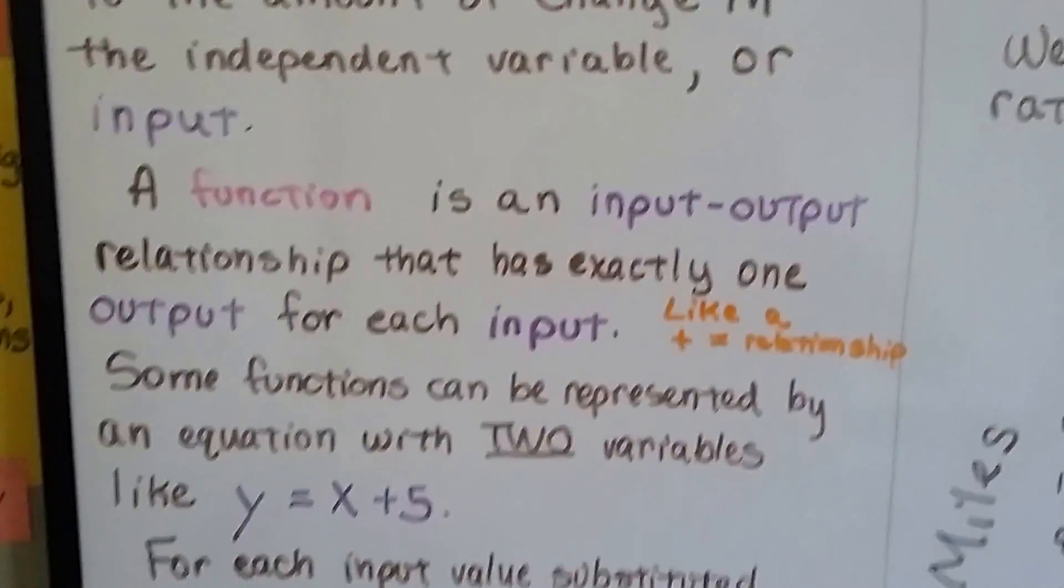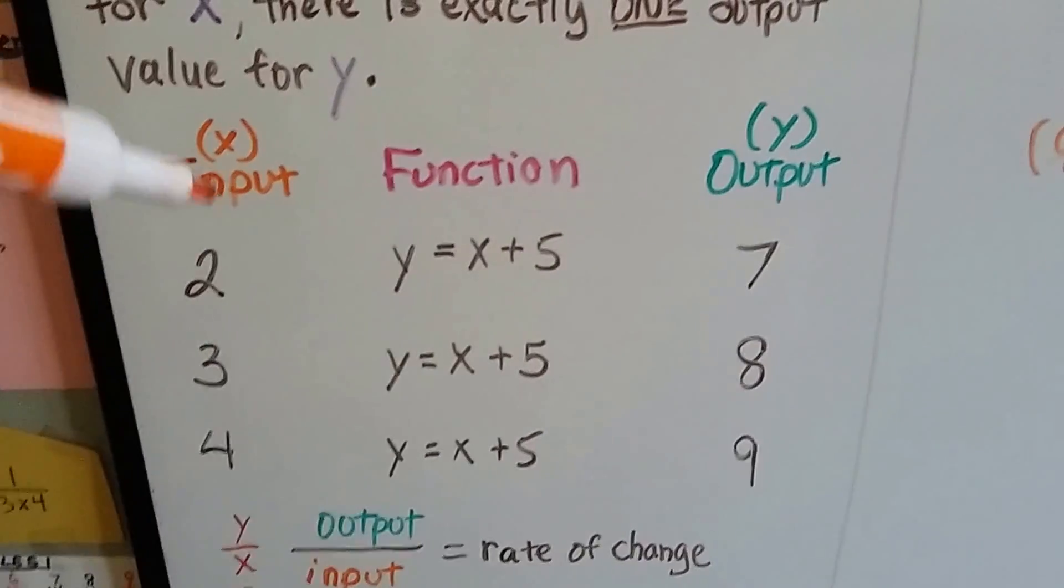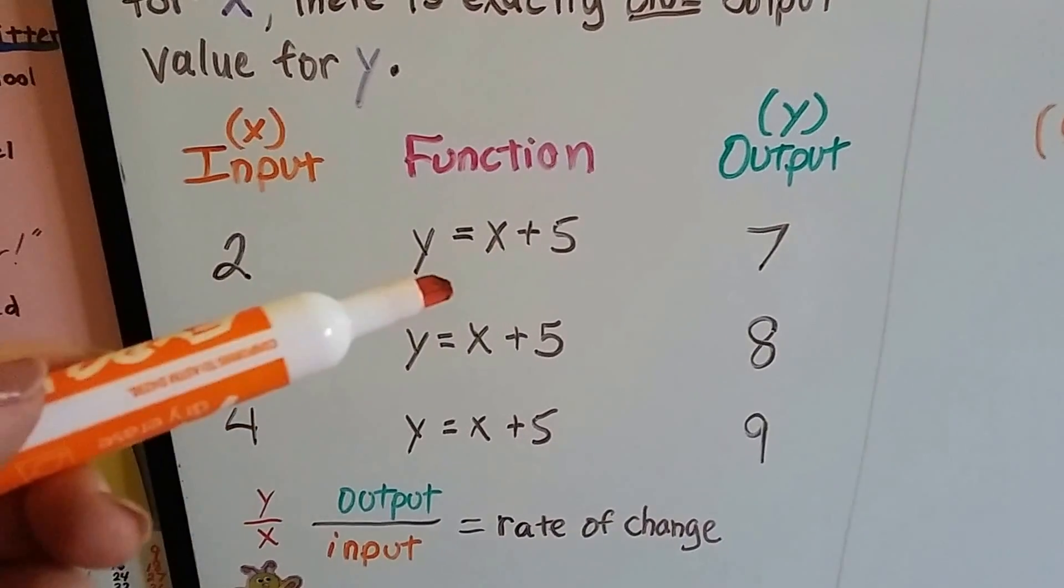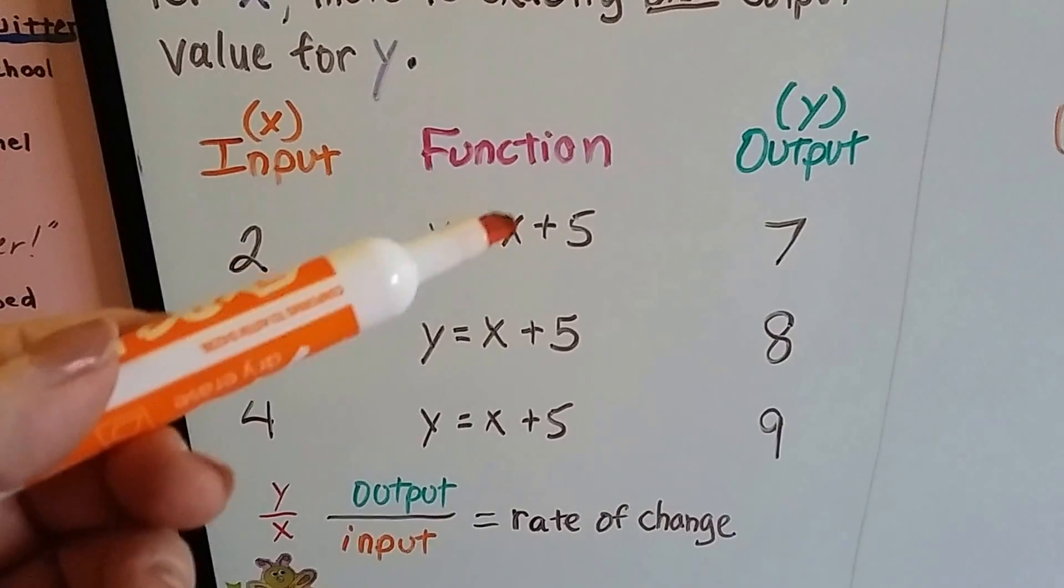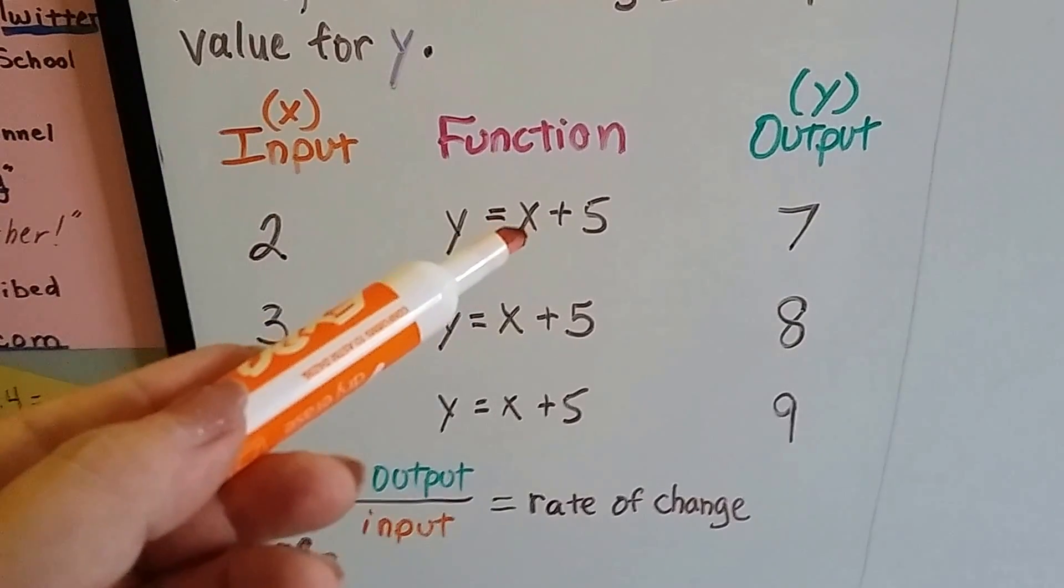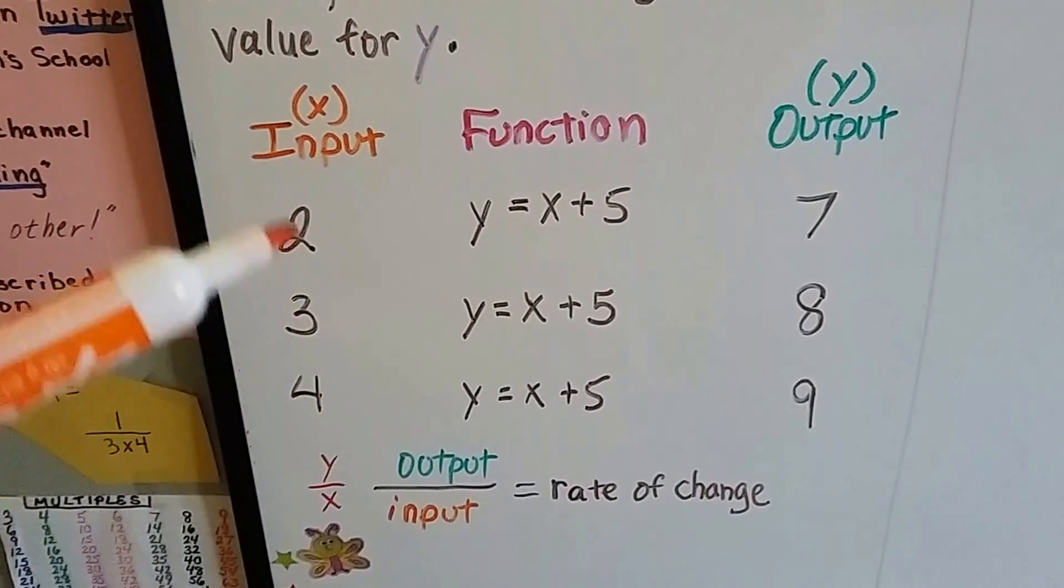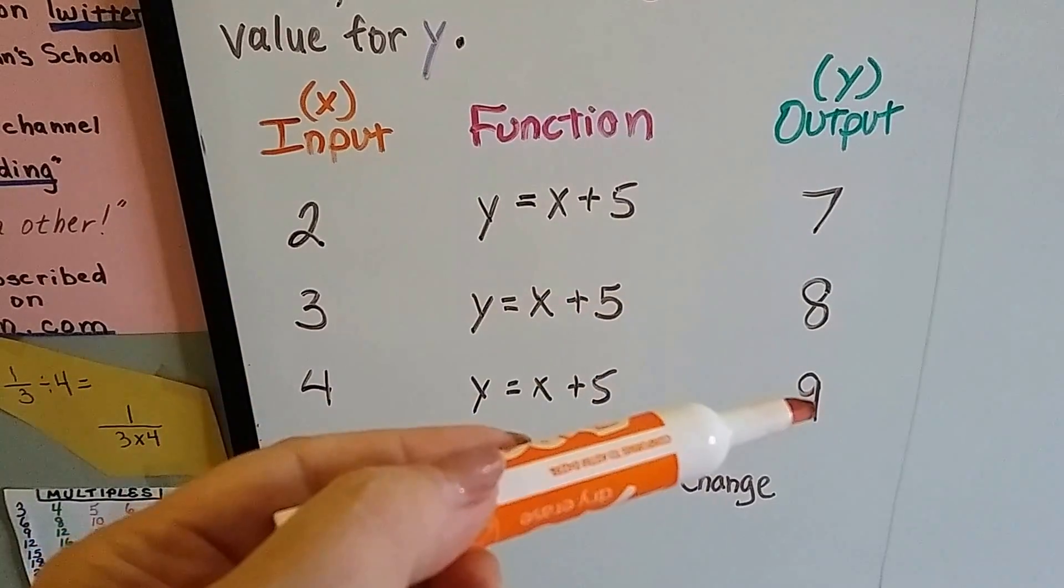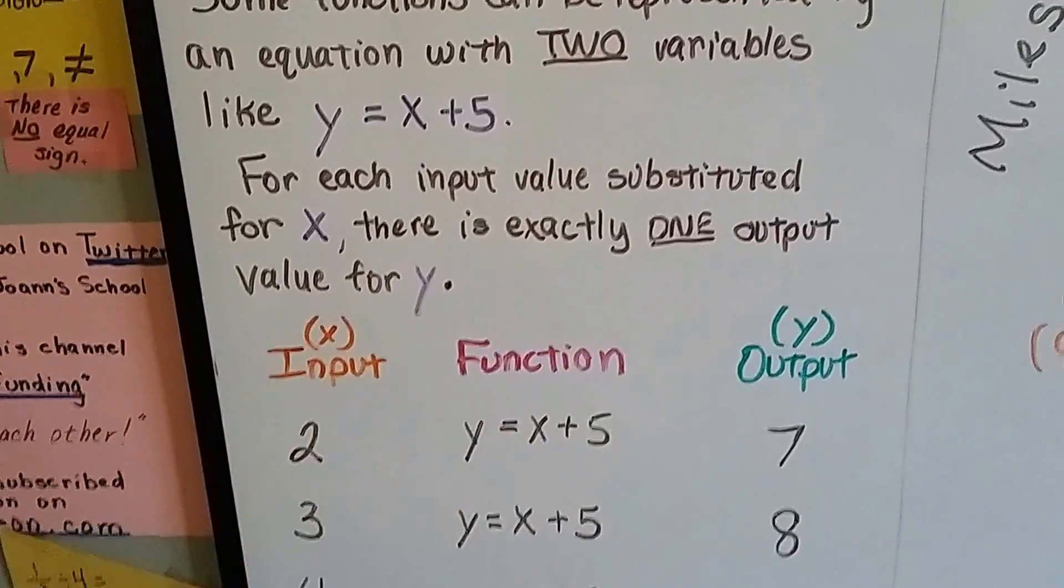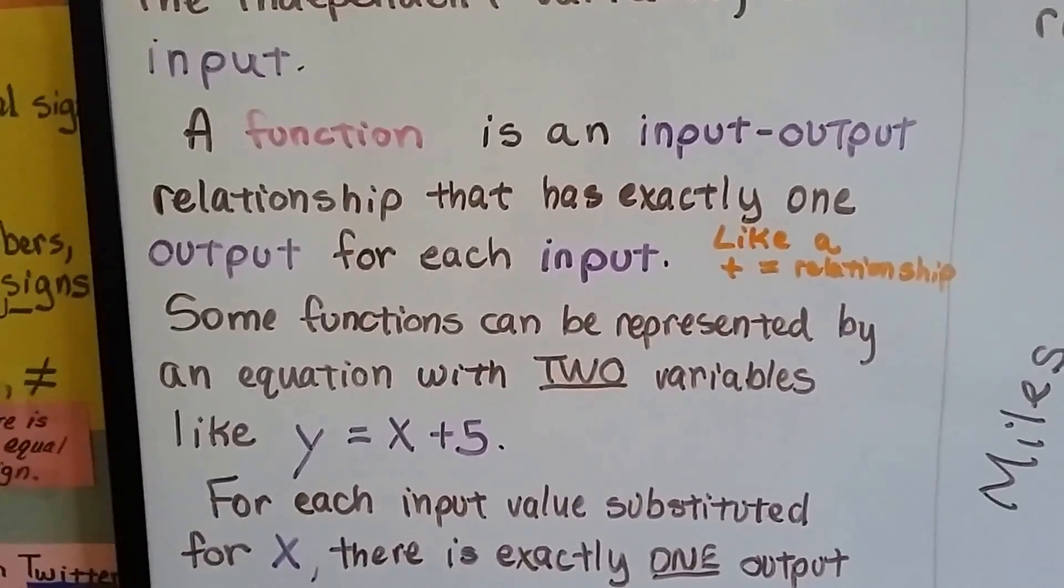We talked about a function too, and this is basically what we said. If x is the input and y is the output, and we have an equation, which is our function, like y equals x plus 5, if we put in a 2 for the x, the y output is going to be a 7. And for each distinct number we put in, we're going to have a distinct number that comes out. So this function, this equation, is an input-output relationship that has exactly one output for each input.